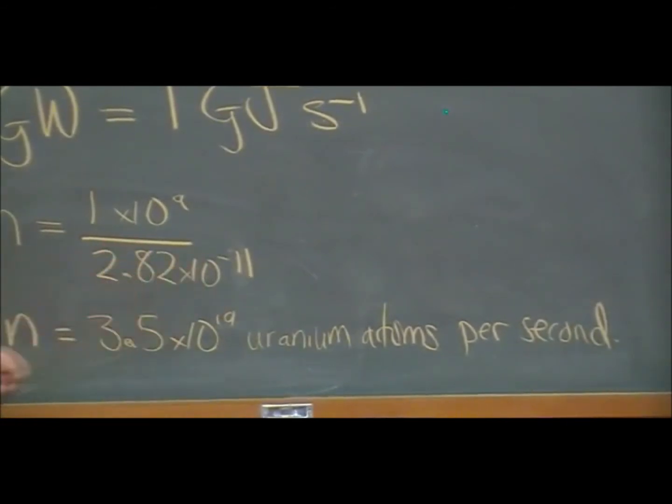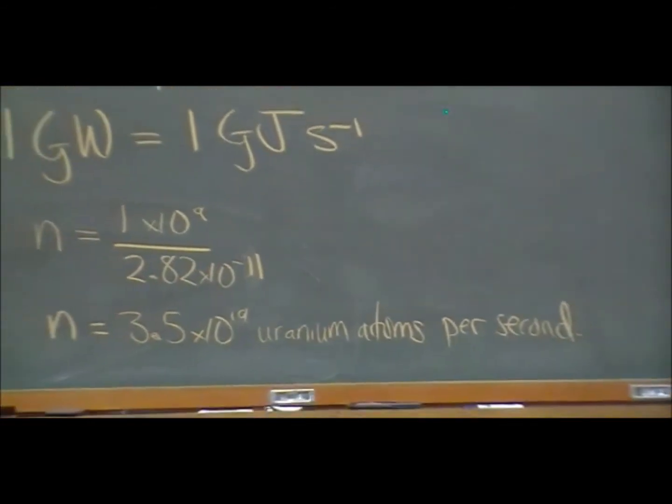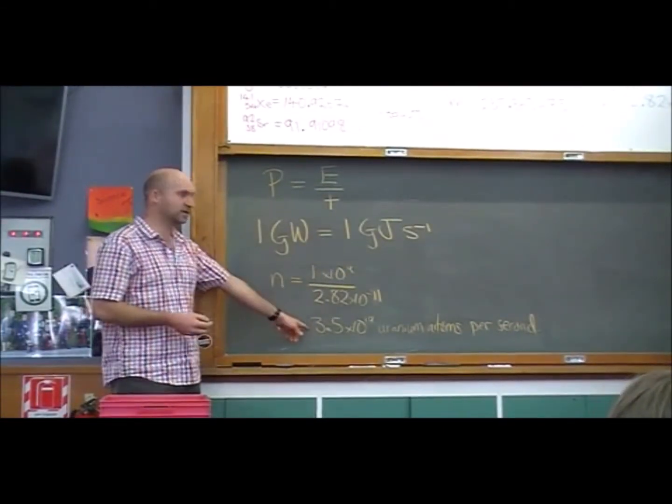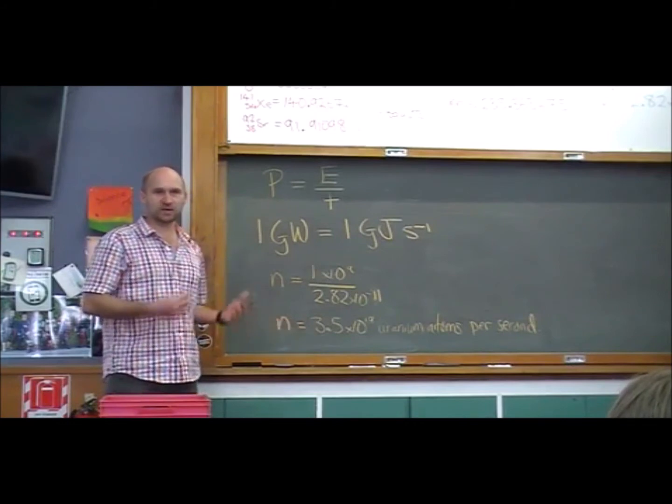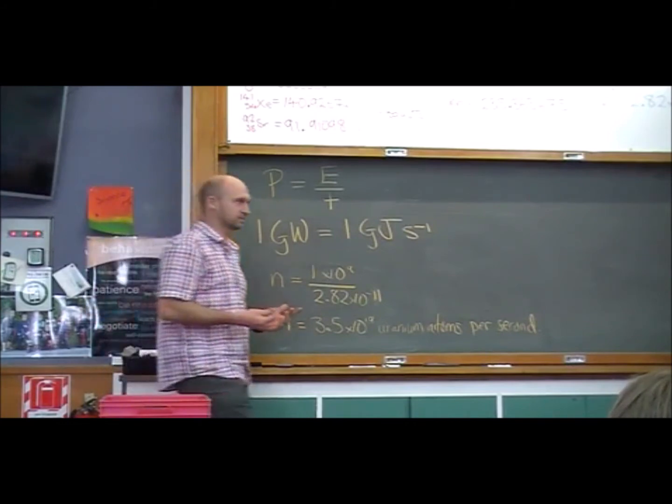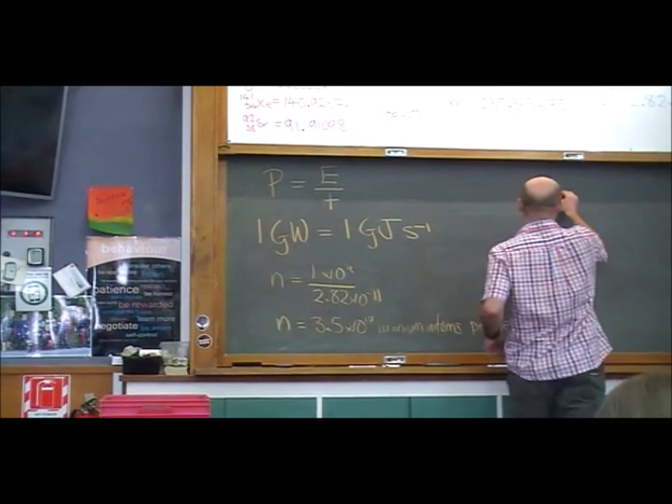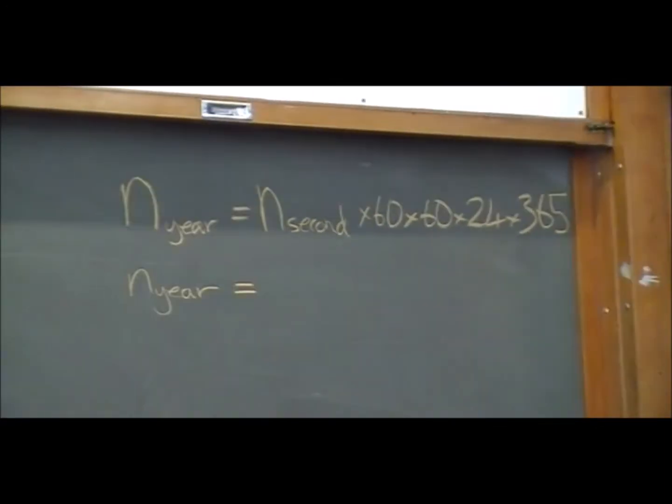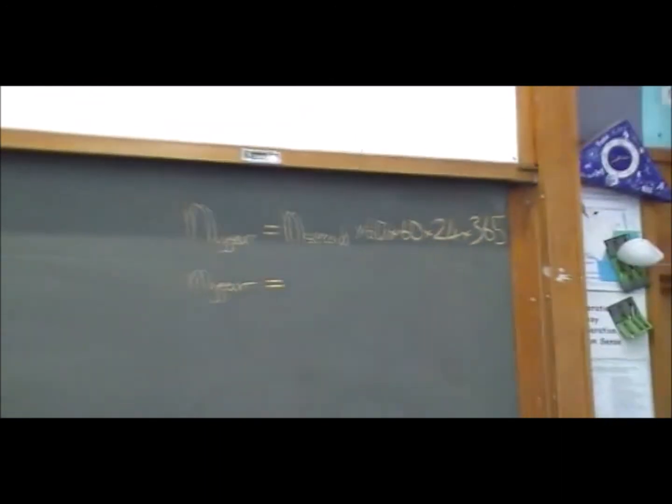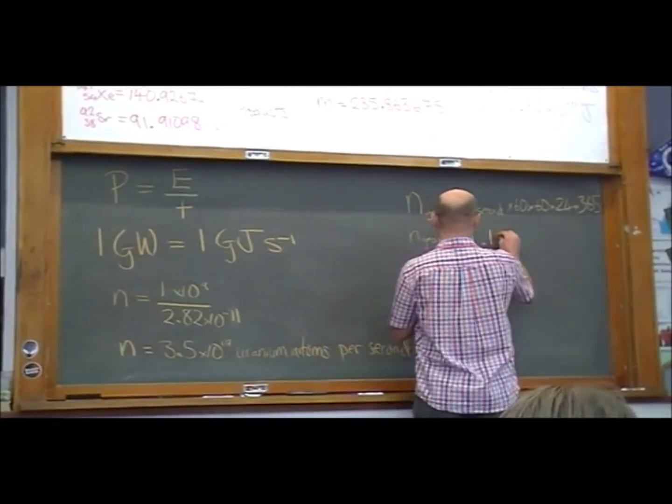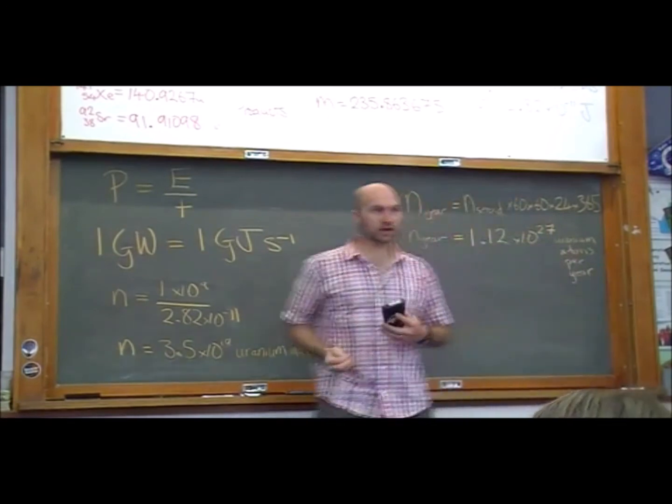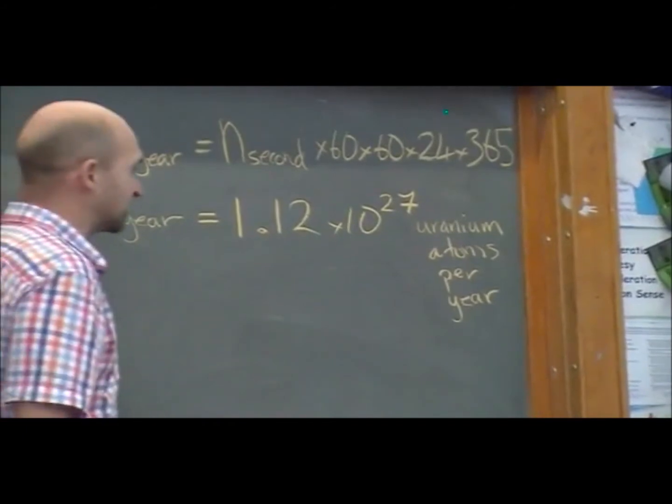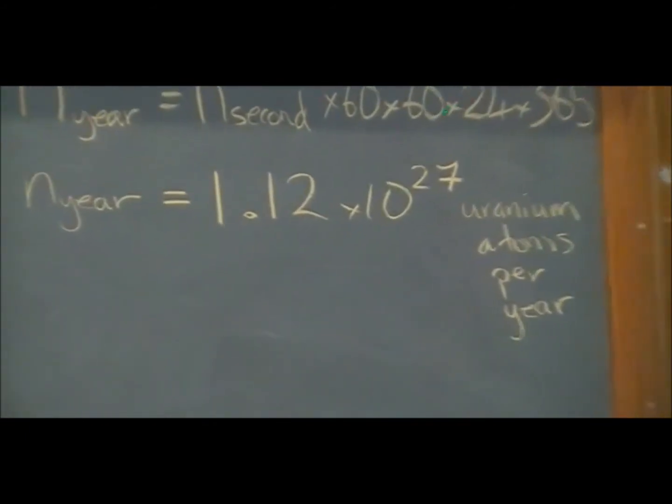So 3.5 times 10 to the power of 19 uranium atoms per second. Let's say we want to run this power plant for a year. How many uranium atoms are we going to need to run this? I mean that's how many we need for one second. How are we going to work that out for a year? Times 60 times 60 times 24 times 365. So in a year we're going to need a lot. So that's quite a lot. 1.12 times 10 to the power of 27 uranium atoms per year.